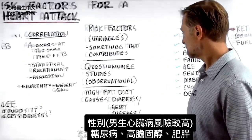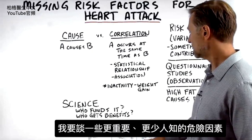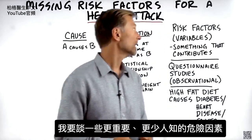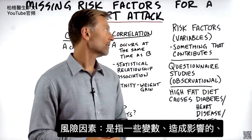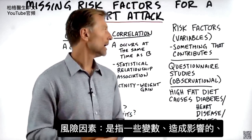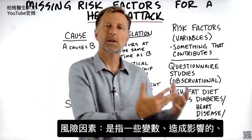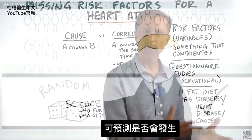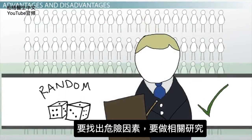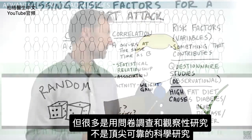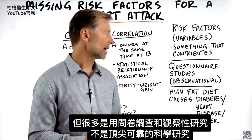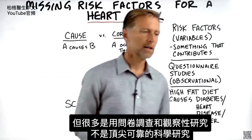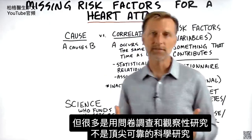Today I'm going to talk about the other factors, which I think are way more important as far as a risk factor. A risk factor is a certain variable — something that contributes to something, something that you use to predict if something's going to happen or not. To figure out these risk factors, they do various studies. Unfortunately, a lot of the studies are questionnaire studies — observational studies — which are not at the top of reliable scientific studies.